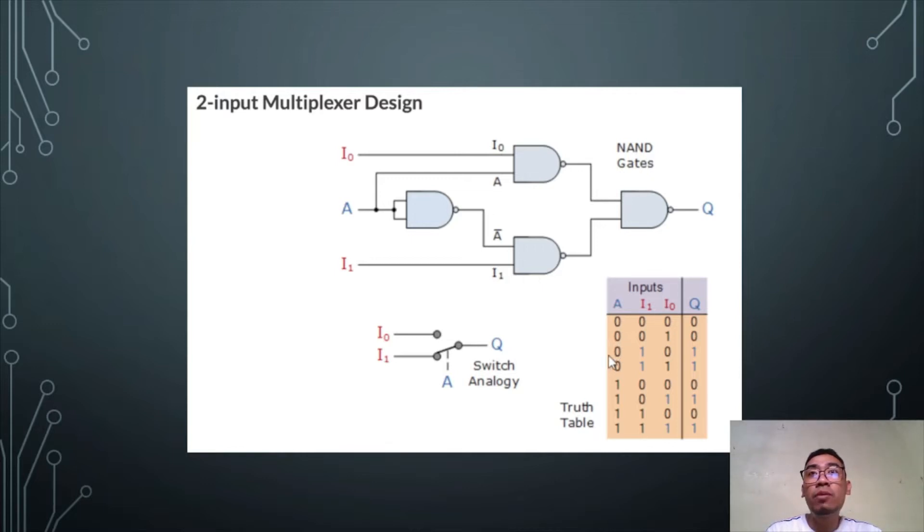if A is equal to zero, the multiplexer will select I1 and pipe it to the output,